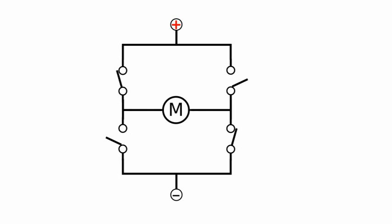This can be done with 4 switches connected as shown. With the switches in this position, the electricity will flow in this path and the motor will run in a certain direction.